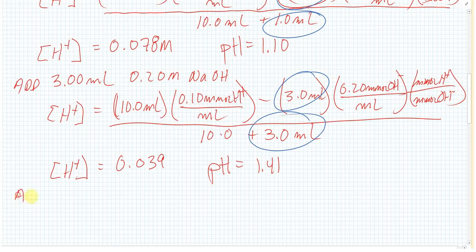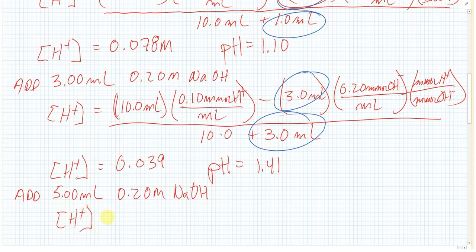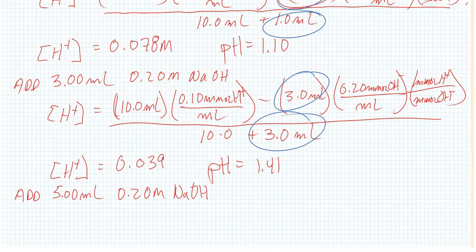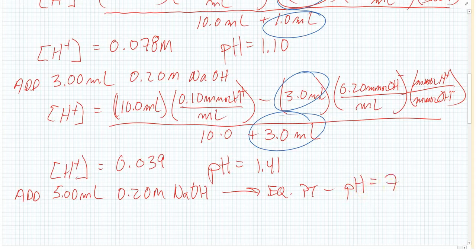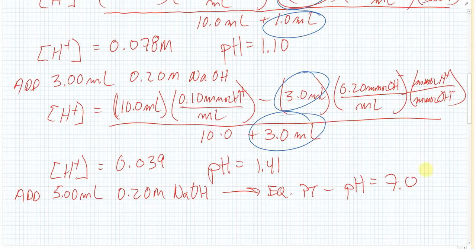At 5 milliliters of 0.20 molar sodium hydroxide, we're at the equivalence point — pH equals 7. Notice the dramatic jump in pH at the equivalence point. The system makes a huge jump from an acidic solution at low pH to a neutral solution right at the equivalence point, and then on to a basic solution.